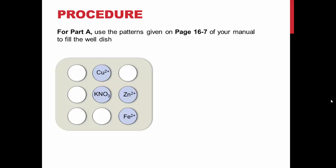For this experiment, you will be using a dish with wells to hold your different half cell solutions. These need to be arranged exactly as shown on the slide and is also shown on page 16-7 of your lab manual. The potassium nitrate in the central well will act as your salt bridge, which will be connected to the other solutions using filter paper.